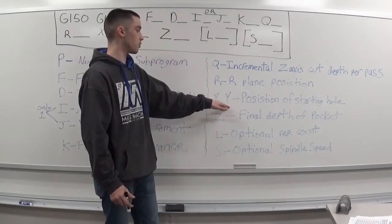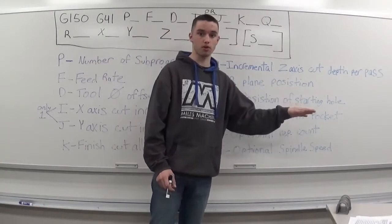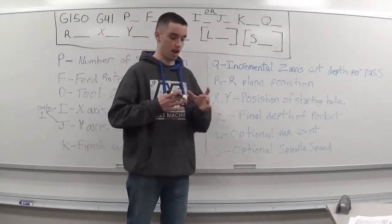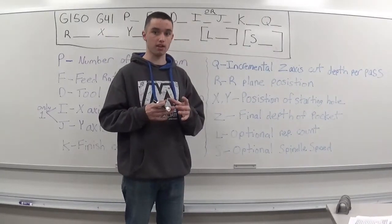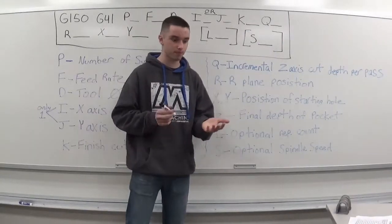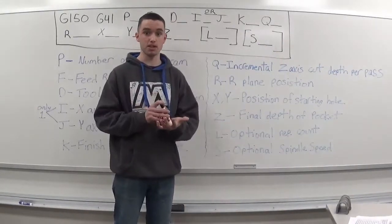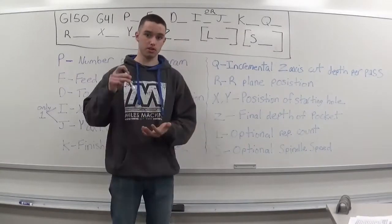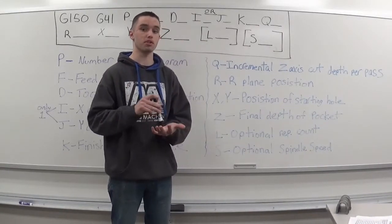Then you have your R, which is your R plane position. Then you have your X and your Y and that is the position of your starting hole. A lot of times when you have your pocket, you put a starting hole like in the center of the pocket or where the pocket is going to be, and that's where your mill will start milling it out.